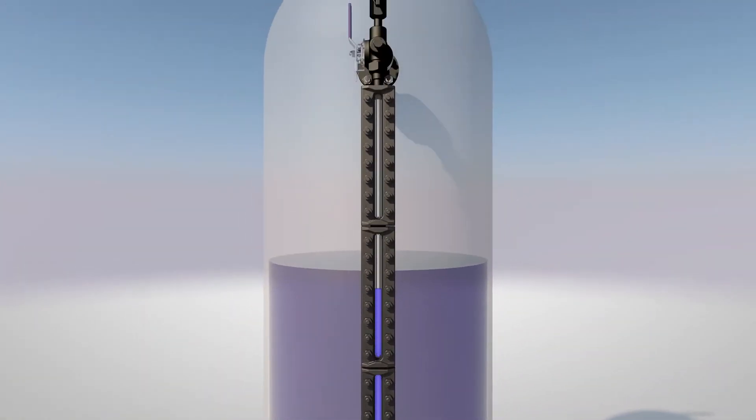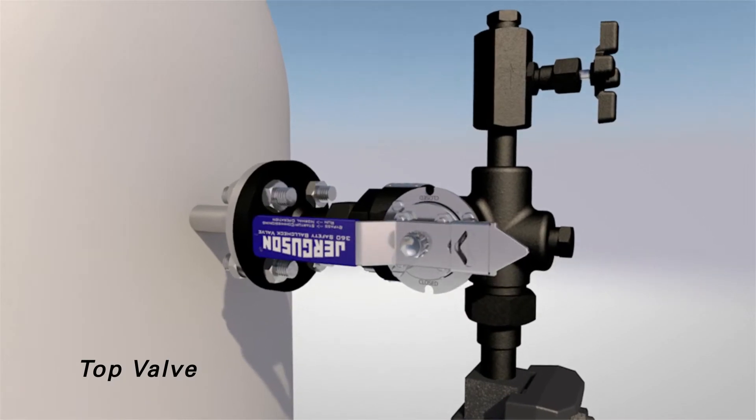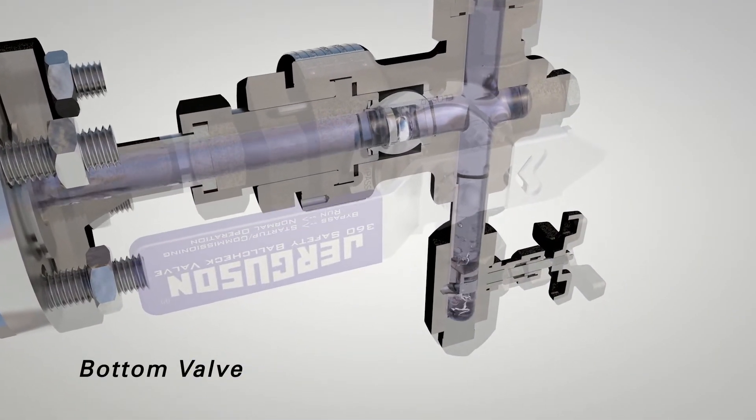Once the level stops rising, move the top valve to the run position, then the bottom valve. The valve is now ready for normal operation.